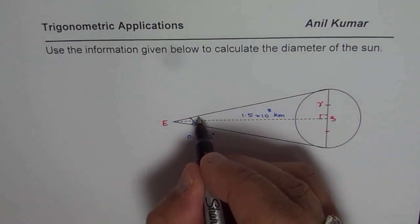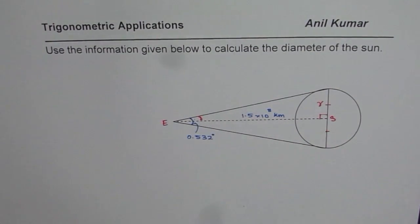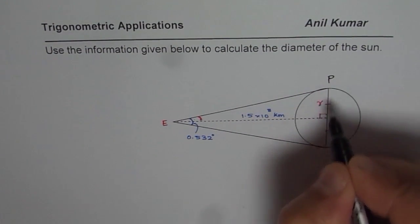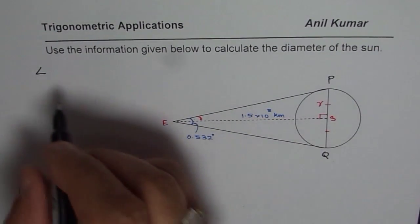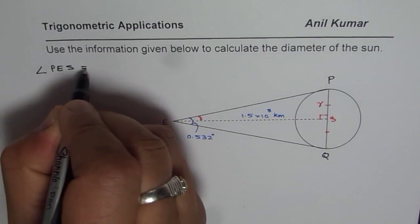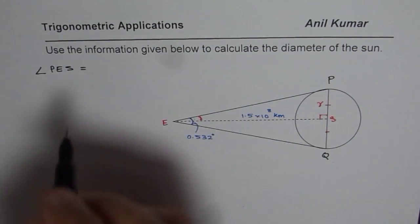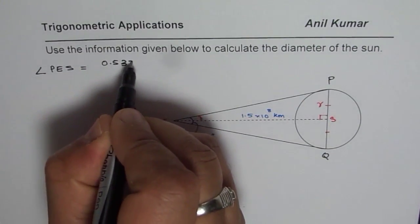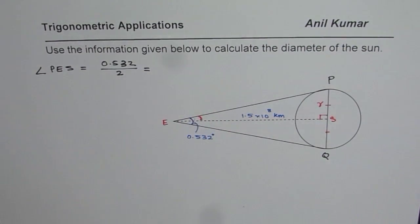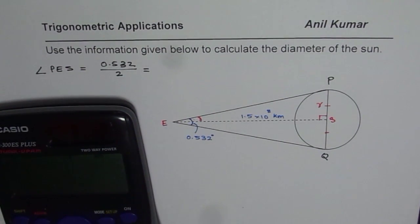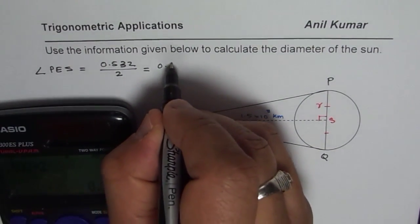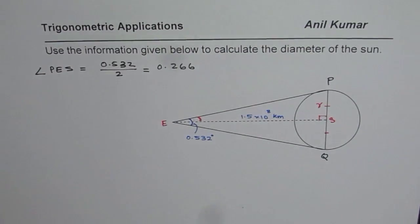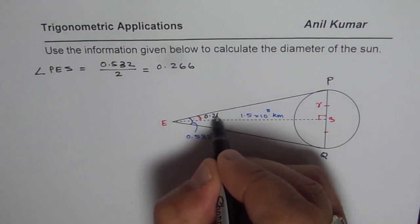So if we know this angle and this angle is half of 0.532, right? So let me say this point is P and this point is Q. In that case, angle PES will be equal to half of the given angle, 0.532 divided by 2. So we can divide this and get the angle. So we have 0.532 divided by 2 equals to, in decimals, 0.266. Now, once you know this angle, which is 0.266 degrees,